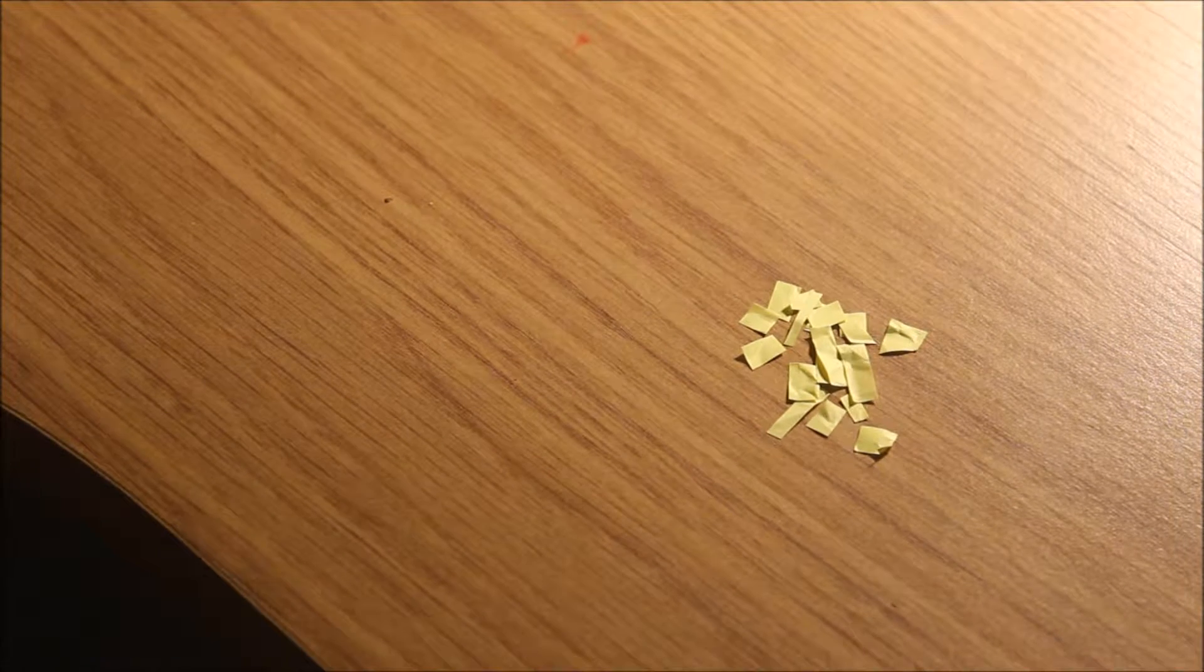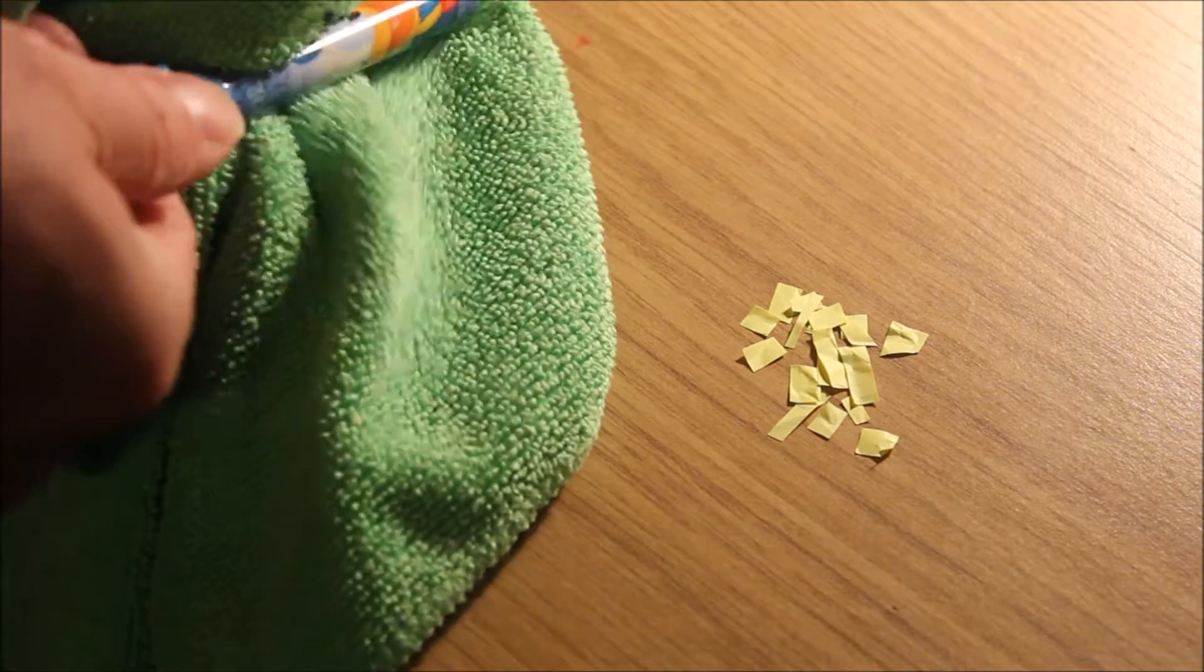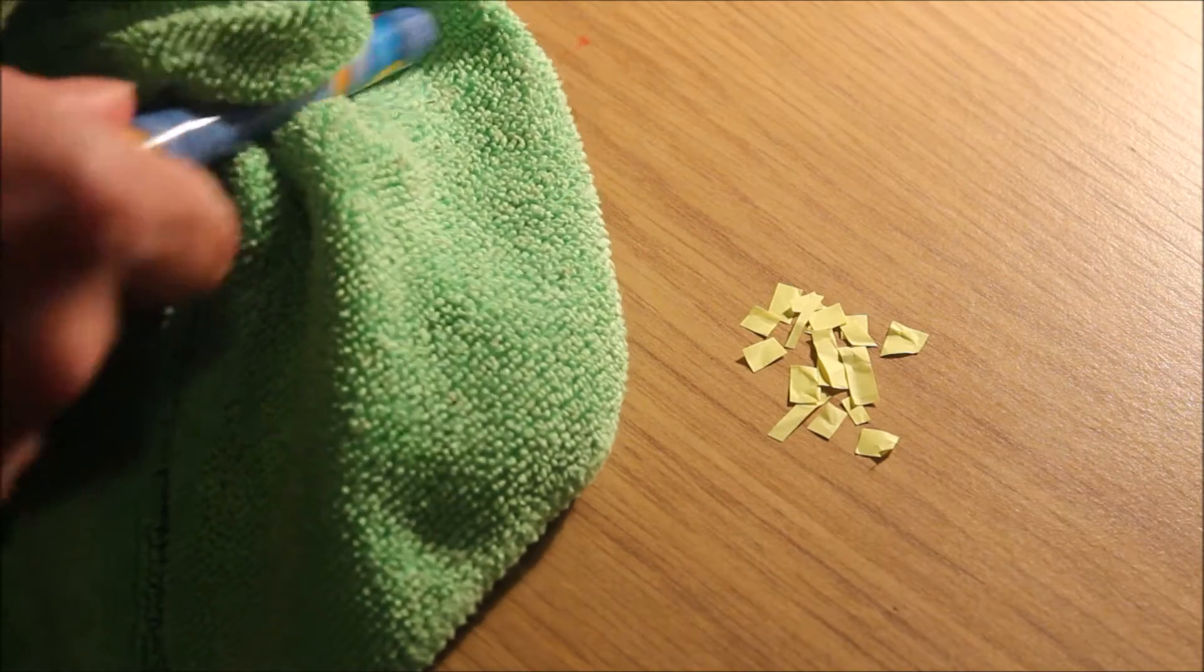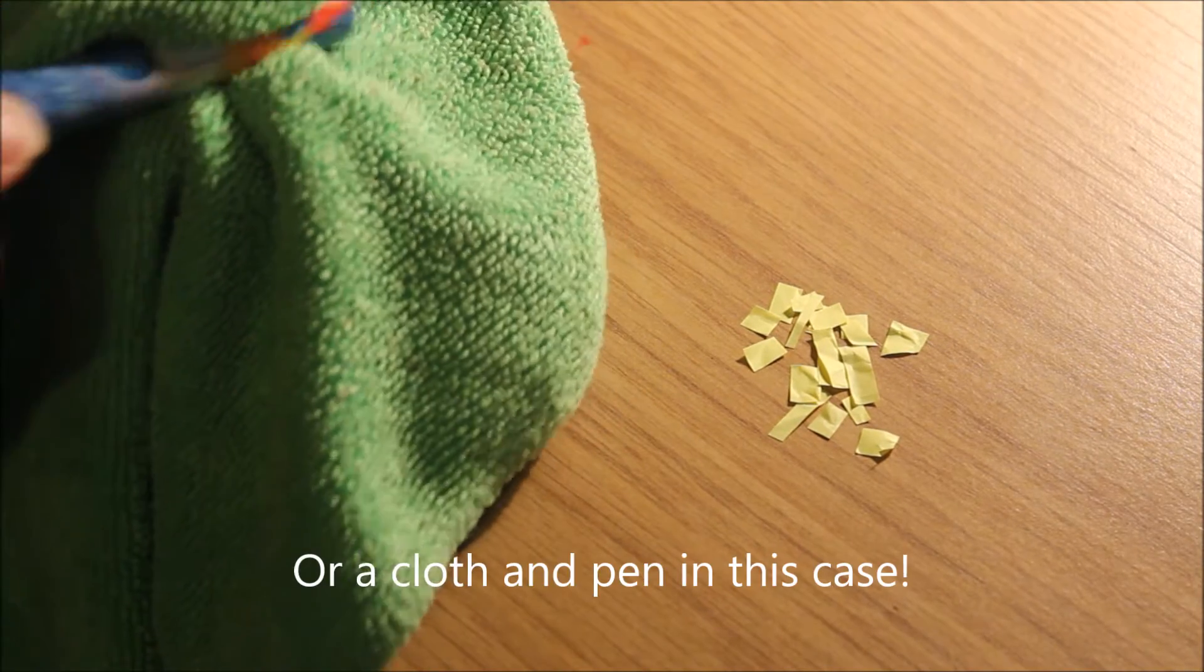When a rod of amber is rubbed with fur, it can attract light objects like pieces of paper. You can experiment with this yourself on a dry day using a cloth and a comb.